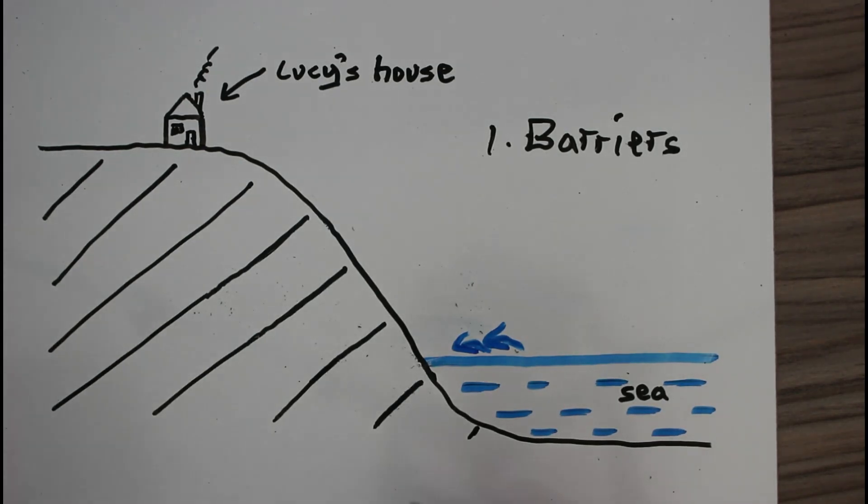Coastal management means ways of looking after and protecting the coast. The first set are the barriers. A sea wall is a big concrete wall — the waves crash into this concrete wall instead of the important rock of the cliff. The advantage is it can also protect against coastal flooding, but the disadvantage is this is the most expensive way of protecting our coastline.